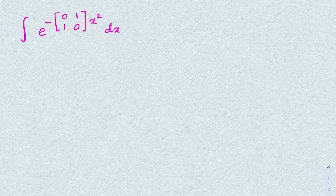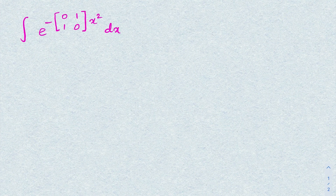Hello everyone, welcome to the Mathematics channel. In this video we are going to solve another interesting integral: the integral of e to the minus A times x squared dx, where A is the 2x2 matrix [[0,1],[1,0]].